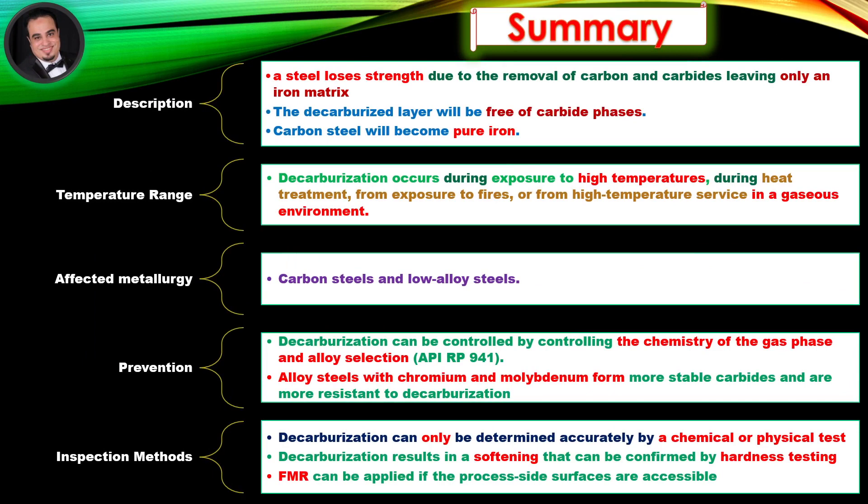Summary: Decarburization is a condition where a steel loses strength due to the removal of carbon and carbides, leaving only an iron matrix. The decarburized layer will be free of carbide phases and carbon steel will become pure iron. Decarburization occurs during exposure to high temperatures during heat treatment, from exposure to fires, or from high-temperature service in a gaseous environment. Affected metallurgy: carbon steels and low-alloy steels. Prevention can be achieved by controlling the chemistry of the gas phase and alloy selection; alloy steels with chromium and molybdenum form more stable carbides and are more resistant to decarburization.